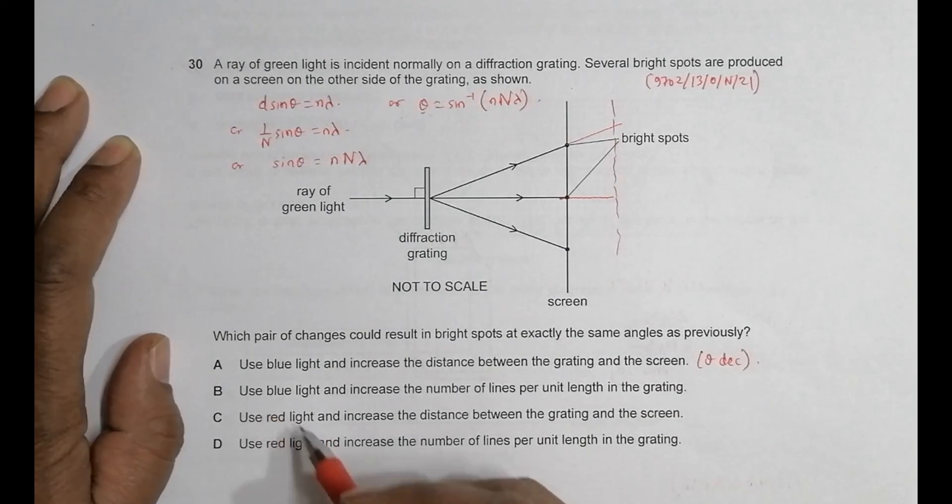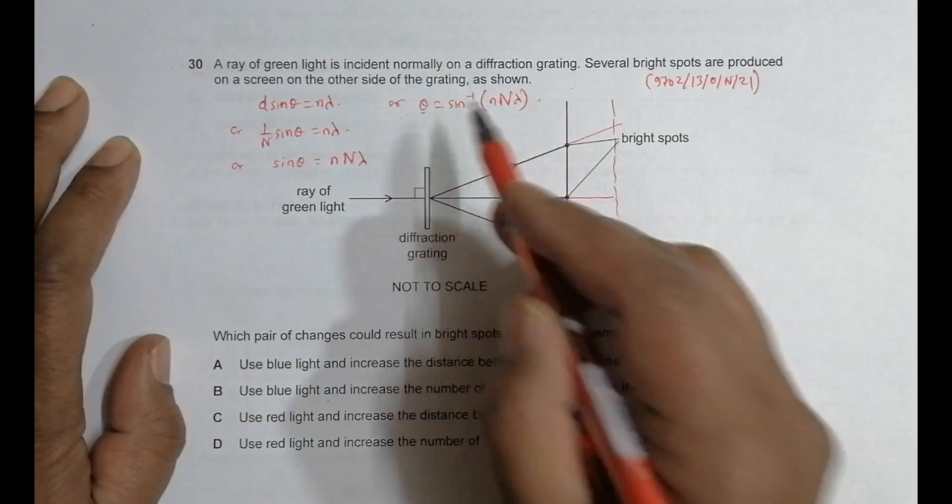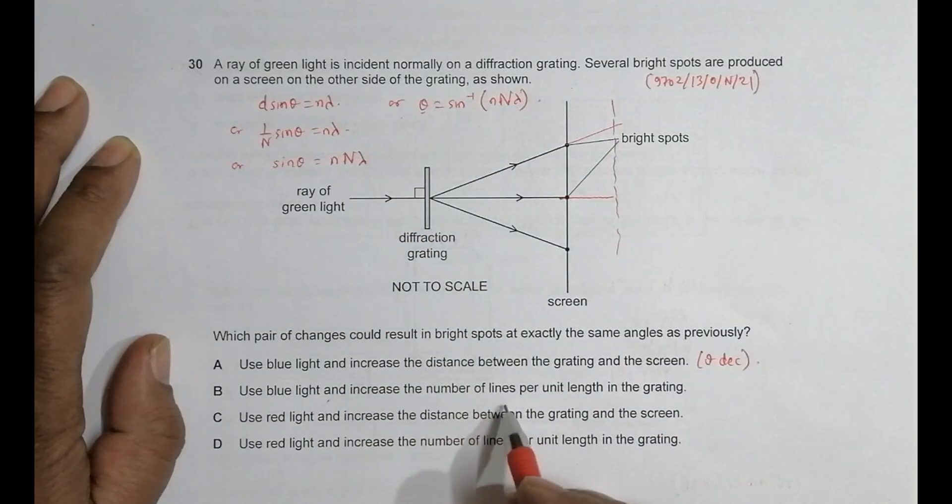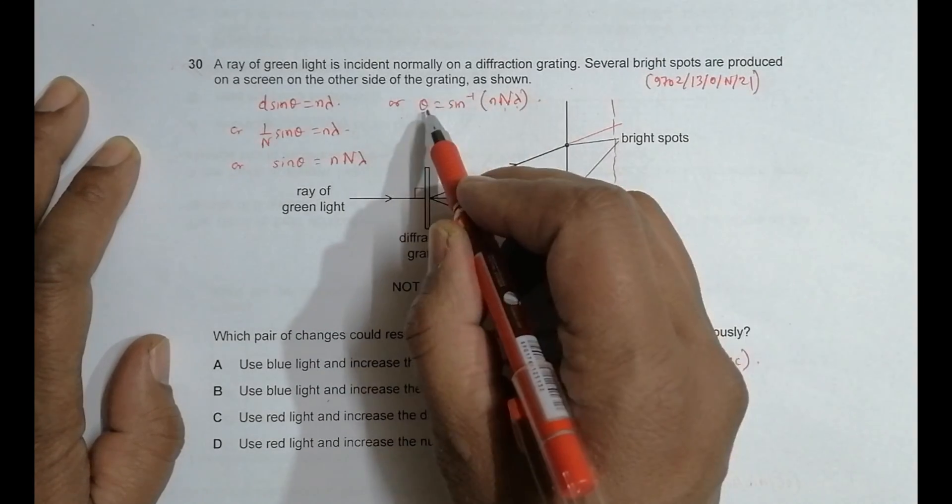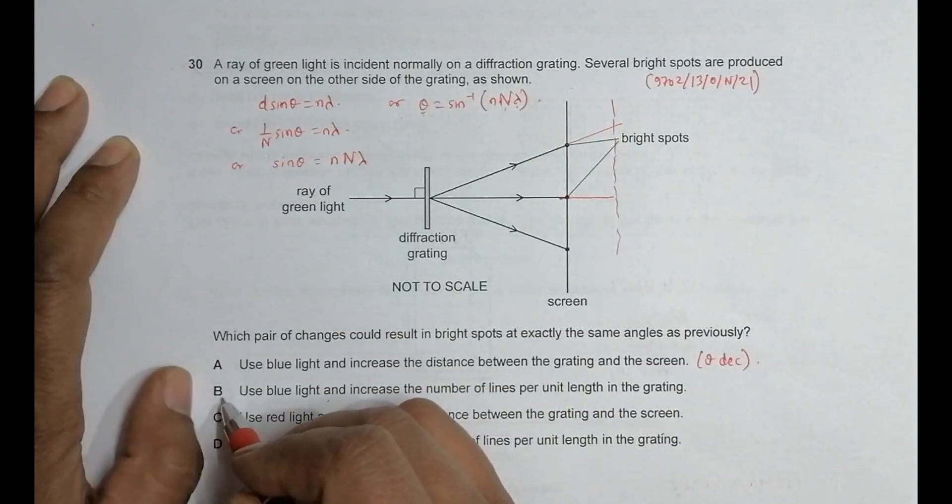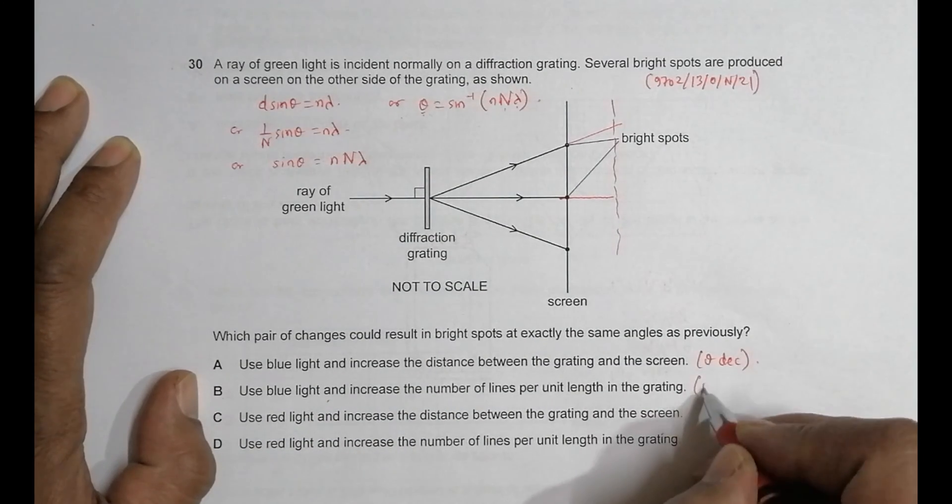So in the second we have got use blue light, this means lambda decreases, and increase the number of lines per unit length. So decrease this and increase this can make same theta. So B seems a feasible choice. Let us say theta same.